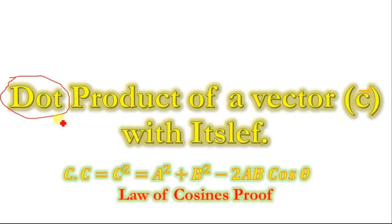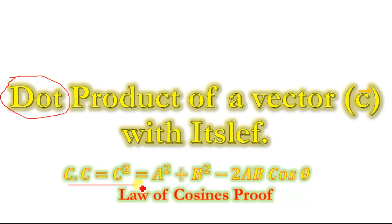Today, we will discuss the dot product of a vector C with itself. This is also known as the law of cosines, and we will prove these equations.